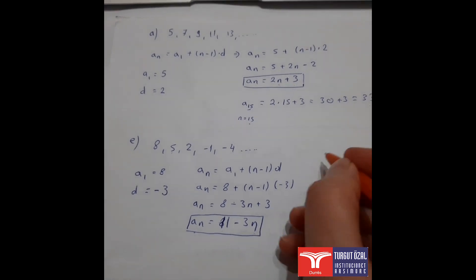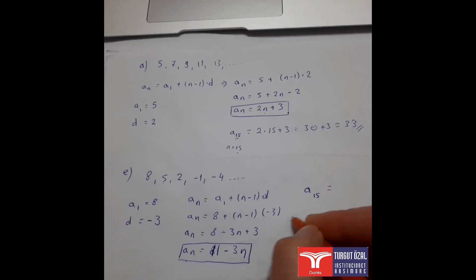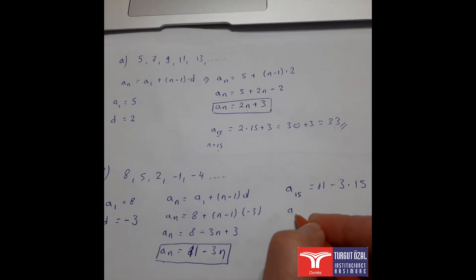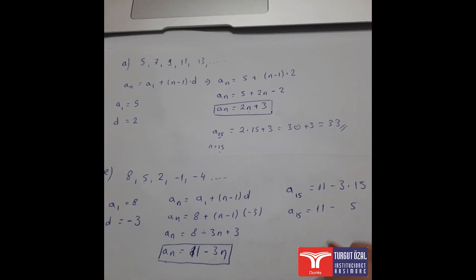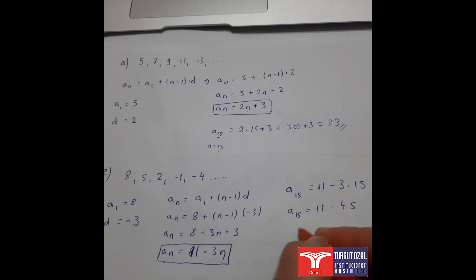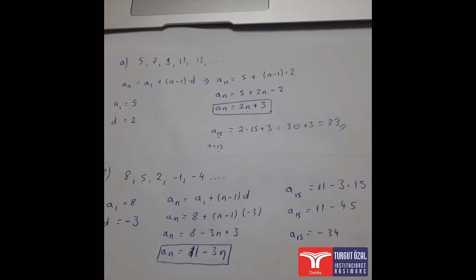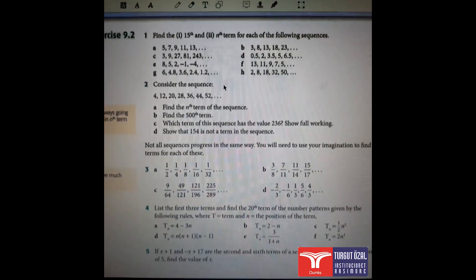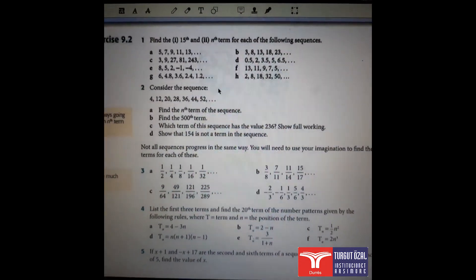Now let's find a15, the 15th term: substitute n = 15 into 11 − 3n to get 11 − 3 × 15 = 11 − 45 = −34. So the 15th term of this sequence is −34. Now pause the video and solve the other ones in your class notebook in the same way.